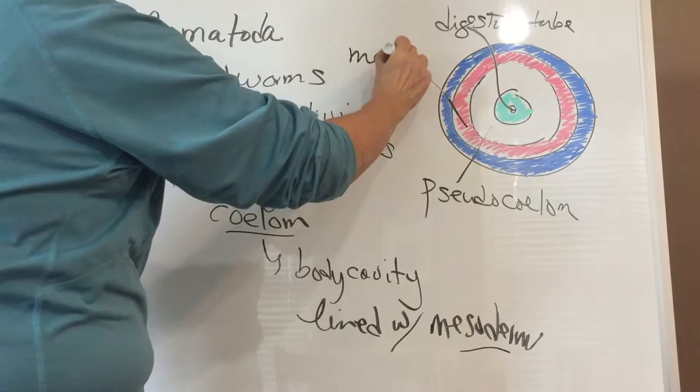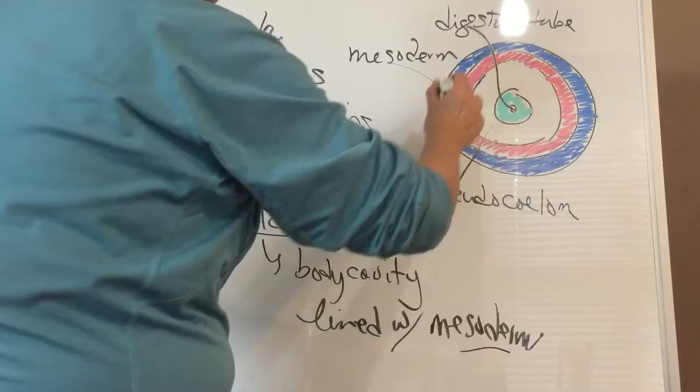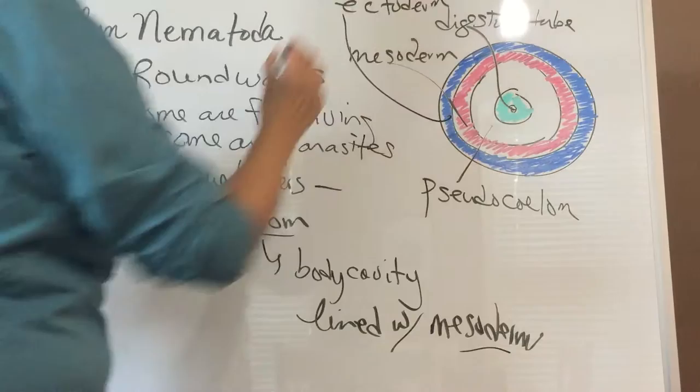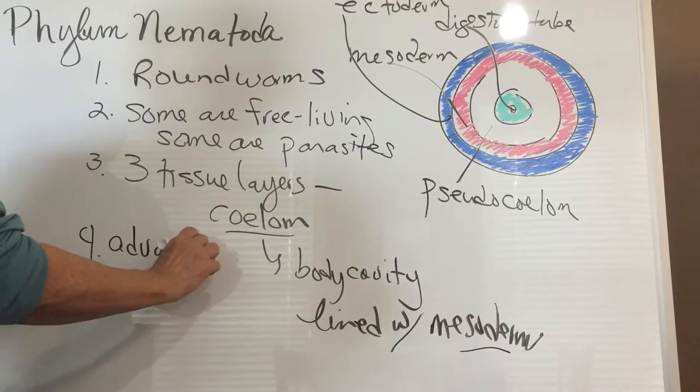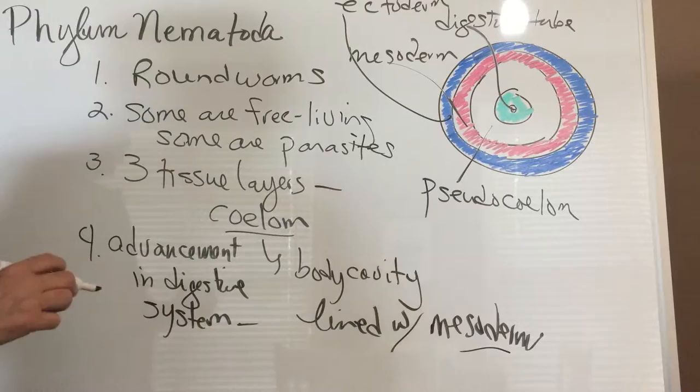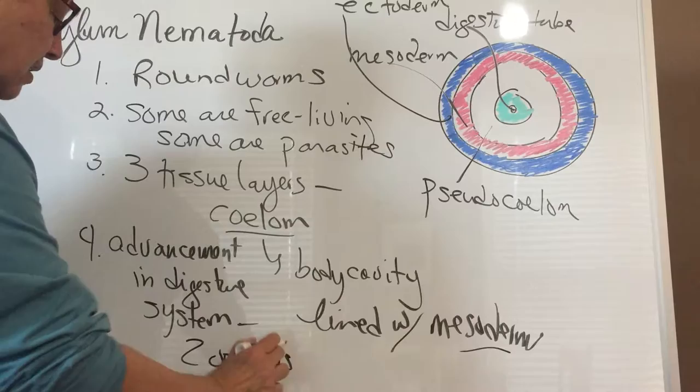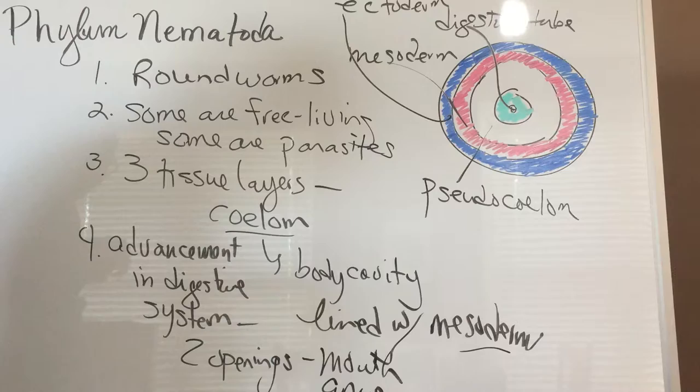Mesodermal tissue becomes muscle and bone ultimately, and this outer layer is what we call the next outer layer, is what we call the ectoderm. Now one other characteristic here is that we actually do have an advancement in the digestive system in that we have two openings. So there is both a mouth and an exit, or the anus.